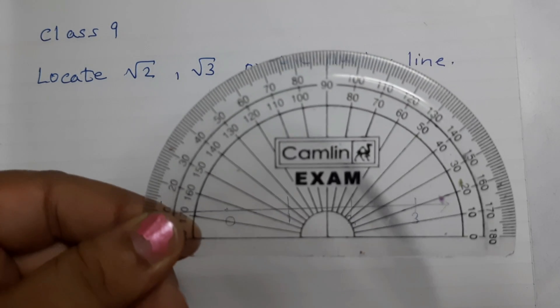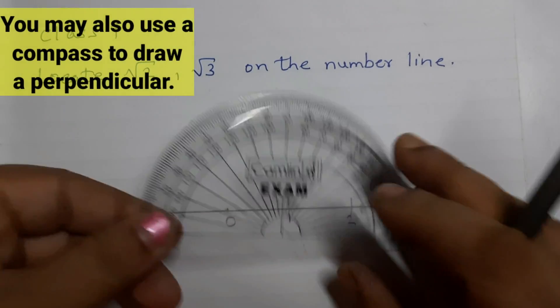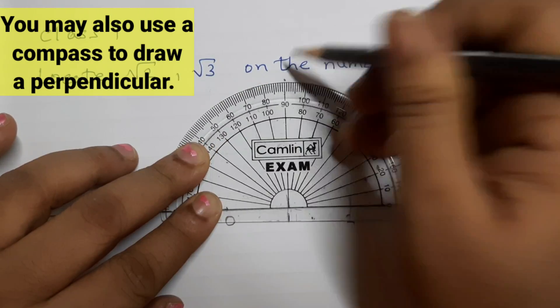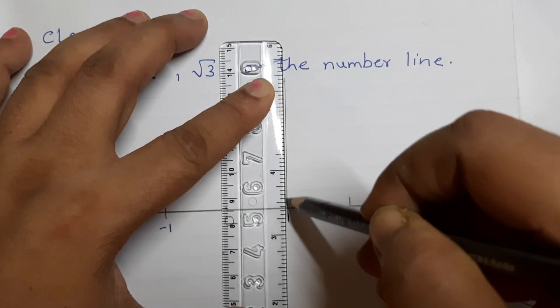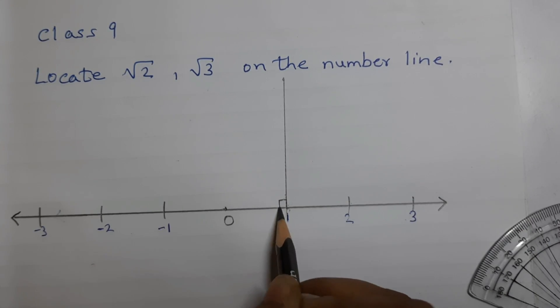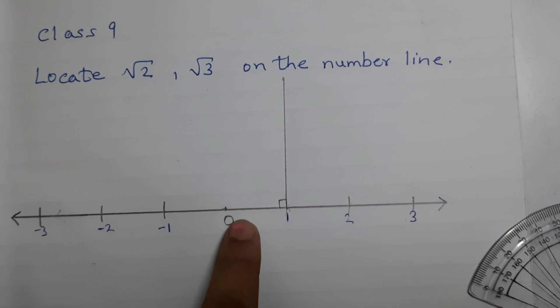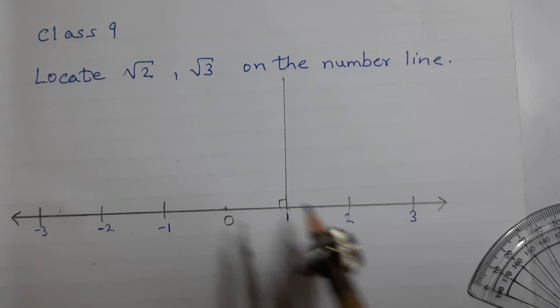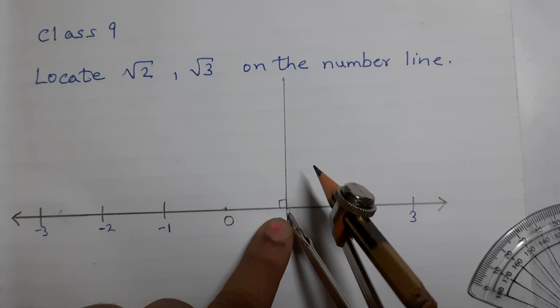Now, take a protractor and draw a perpendicular from this point. And join this point with 1. This is 90 degrees angle. Take the compass and take this measurement which is from 0 to 1. And cut an arc, keep the metal point at 1 and cut an arc.